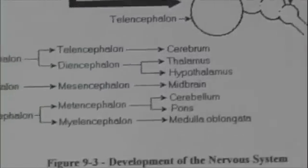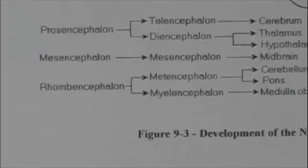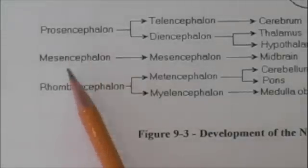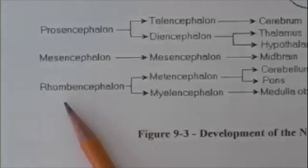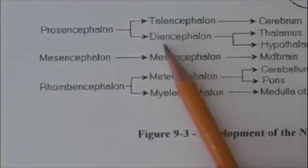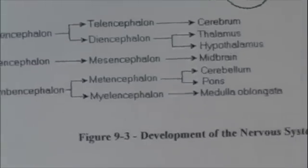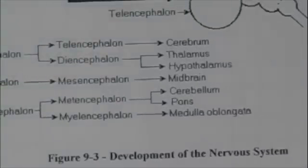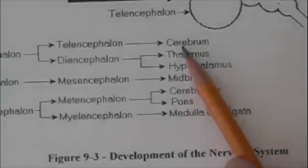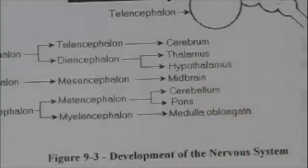This outline shows the development of the embryonic brain. Prosencephalon, mesencephalon, and rhombencephalon subdivide into the parts we just mentioned, and each of those parts then eventually becomes one of the major parts of the brain.